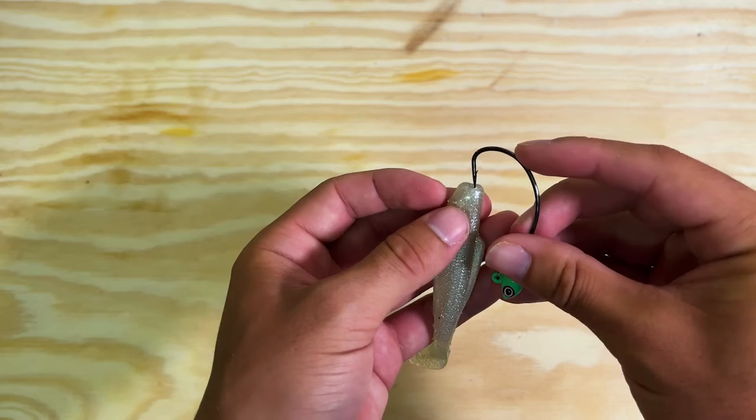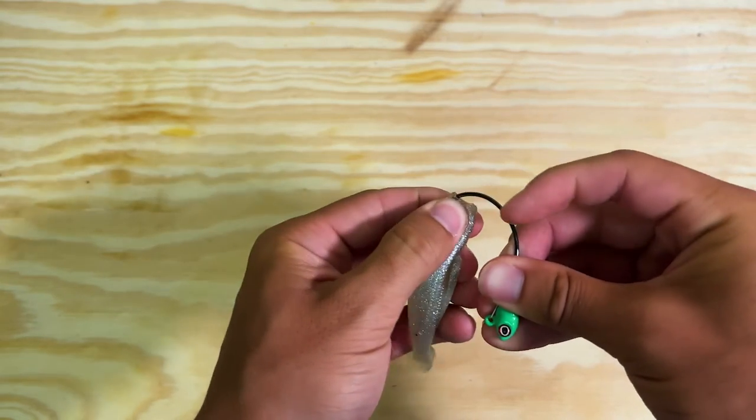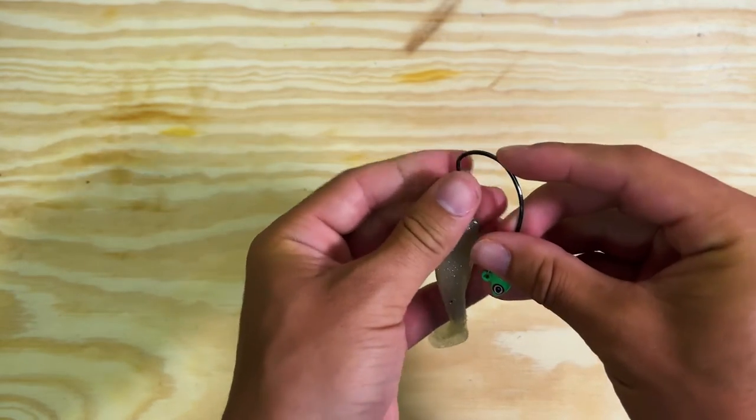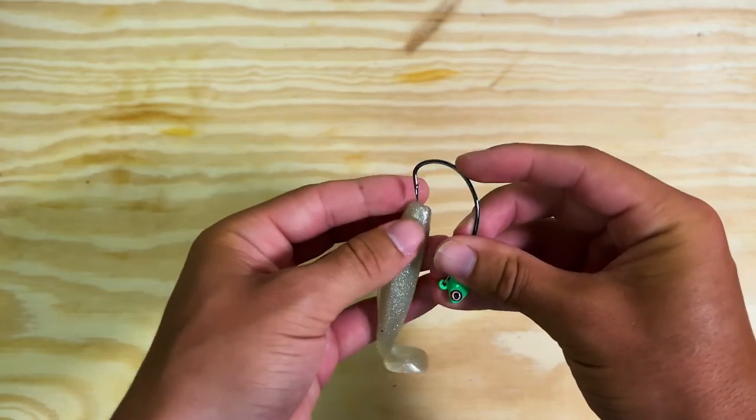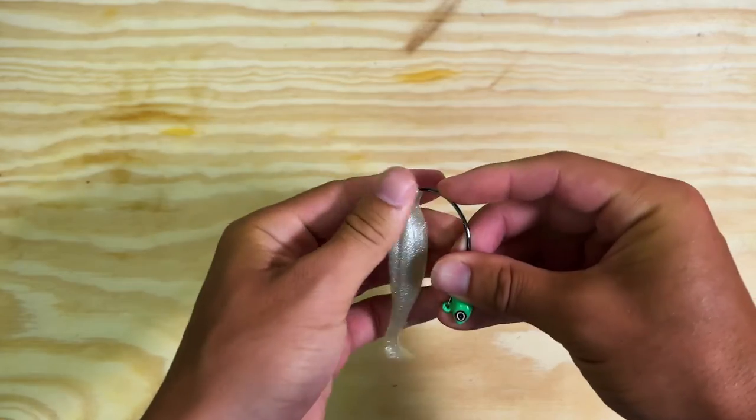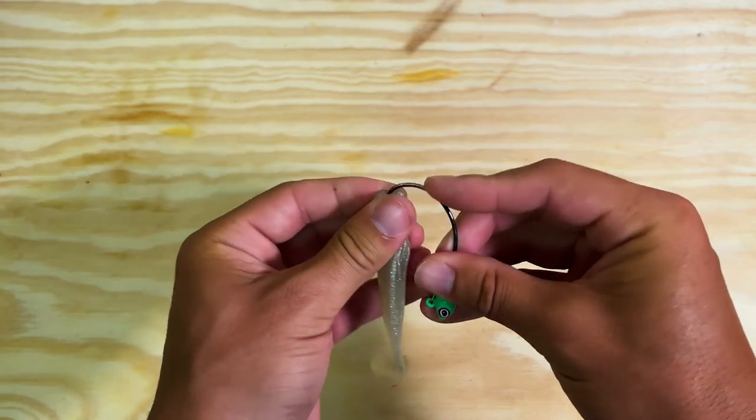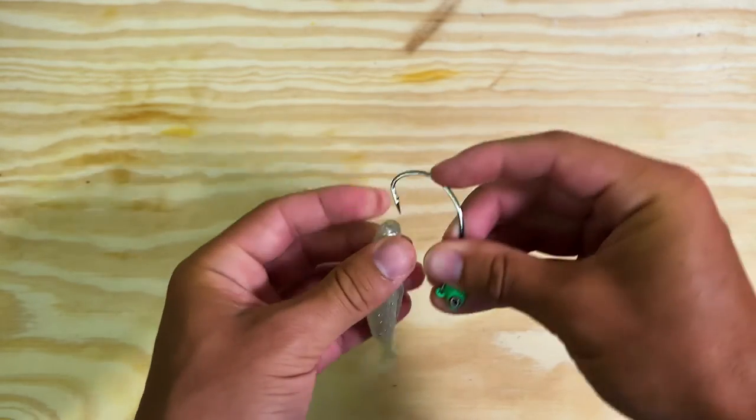Spin it like another quarter turn. You do this probably four to six times. The more you do, the better. Just makes it a little easier to get that screw lock in there. So that was probably like six.